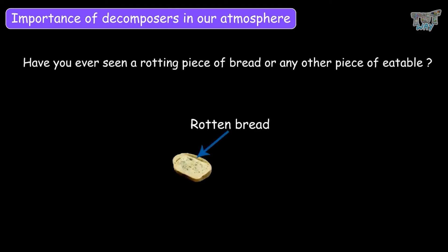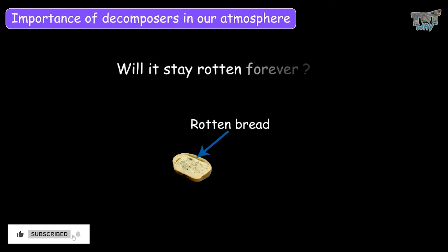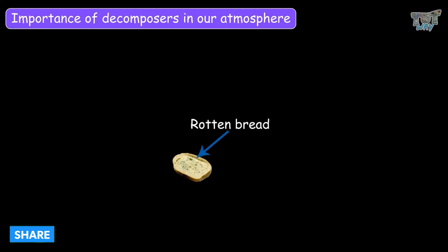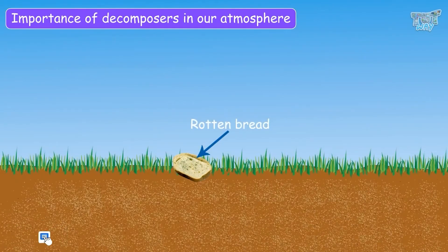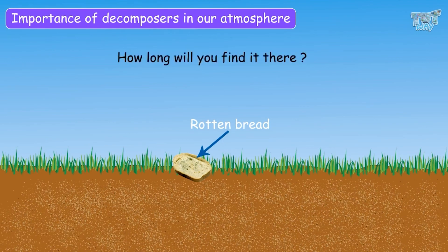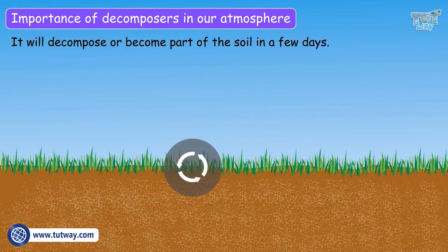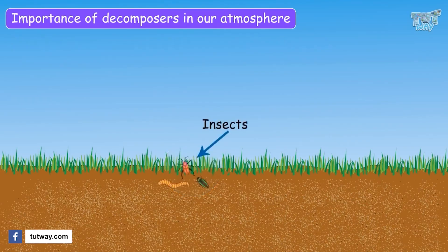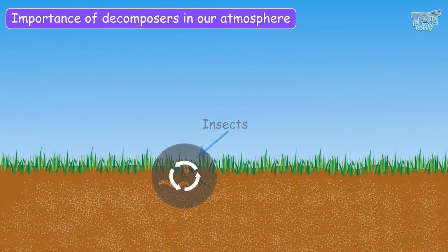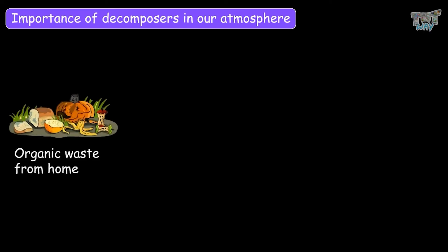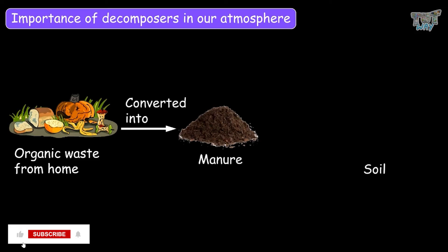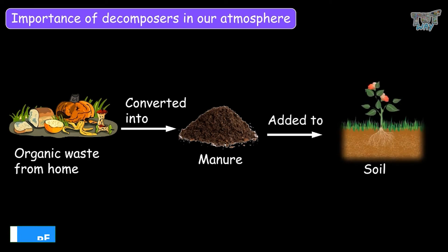Now let's learn the importance of decomposers in our atmosphere. Have you ever seen a rotting piece of bread or any other eatable? If you throw any piece of bread or fruit or cookie in mud, it will decompose or become part of the soil in a few days. Insects, when they die, also decompose and become a part of the soil. Organic waste from our homes is converted to usable nutrients using worms as decomposers, which can be added to the soil for making it more fertile or making your plants grow bigger.